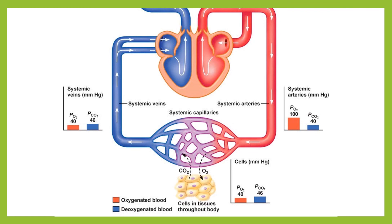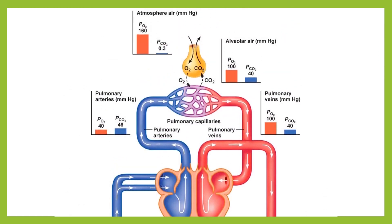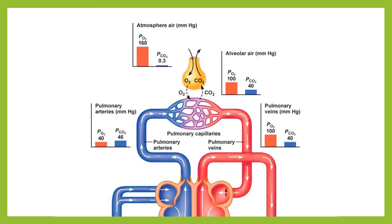So we've increased the partial pressure of carbon dioxide in the systemic veins and reduced the partial pressure of oxygen in the systemic veins. That blood heads back to the heart, then to the right side of the heart, and ultimately to the lungs — where again the partial pressures in the blood will be different from those in the lungs. At the bottom we're taking oxygen out of the blood and putting carbon dioxide in; following the systemic veins through the heart to the lungs, we do the opposite: oxygen flows from the alveoli into the bloodstream, carbon dioxide from the bloodstream into the alveoli, and the whole system repeats.